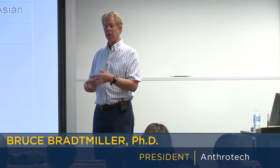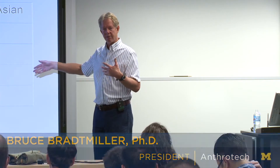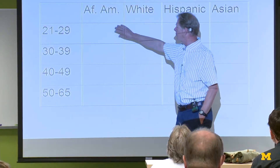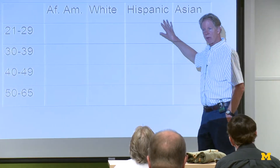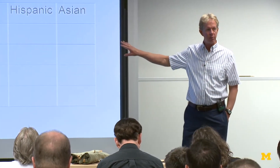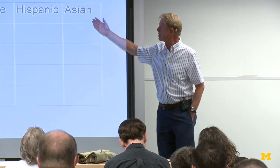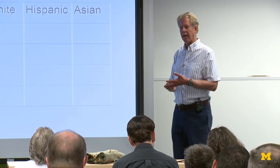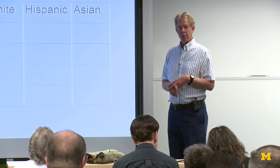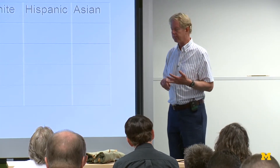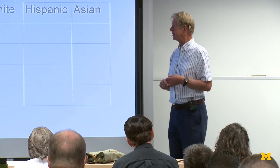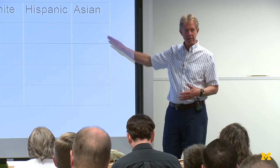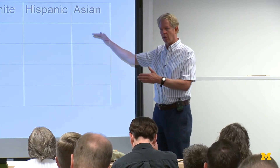How to measure people: we have a stratified sampling plan. We are looking for specific numbers of people in each of these cells to make sure that we are capturing the variation that we want to capture. Sex isn't on here, but I would have one of these for males and one of these for females. If you're going to do a valid anthropometric data collection, it doesn't have to look exactly like this, but it needs to look something like this. You need to make sure that you're capturing all of the different categories.